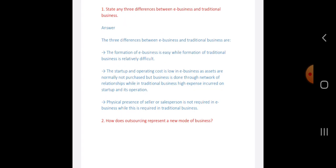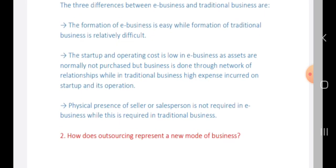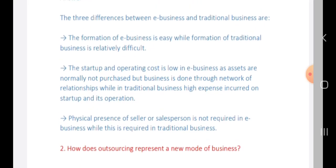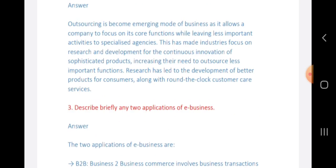Let us state any three differences between e-business and traditional business. First, the formation of an e-business is easy while formation of traditional business is relatively difficult. Second, the startup and operating cost is low in e-business as assets are normally not purchased but run throughout the network. Third, physical presence of sellers or salespersons is not required in e-business, while it is required in traditional business.